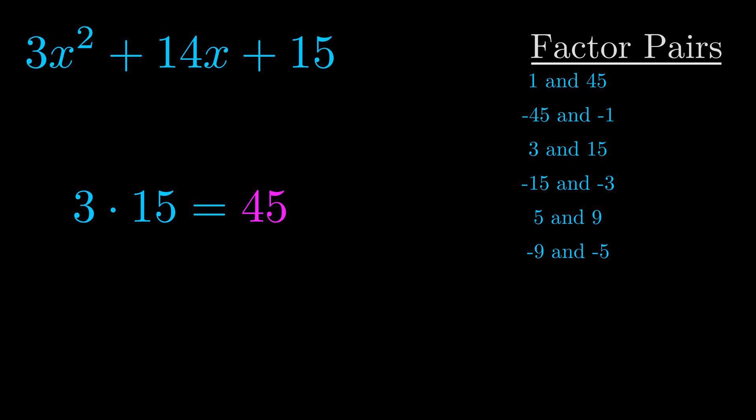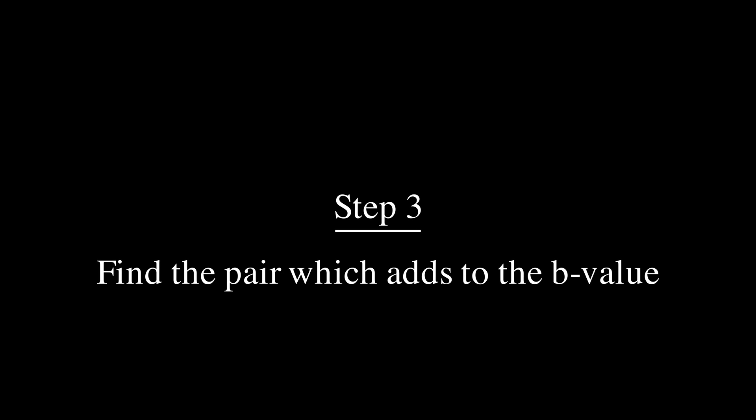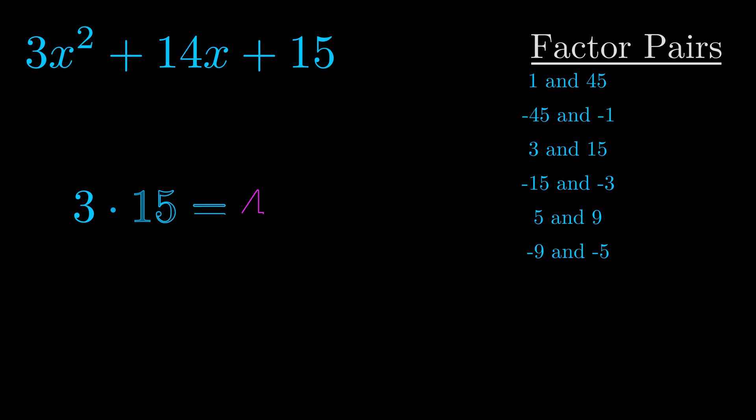Now once you have these factor pairs, the goal is to find which of these pairs adds to the b value. The b value is the coefficient on the x term. That's the middle term, the one that we haven't done anything with yet. And really this is the only factor pair that we need.